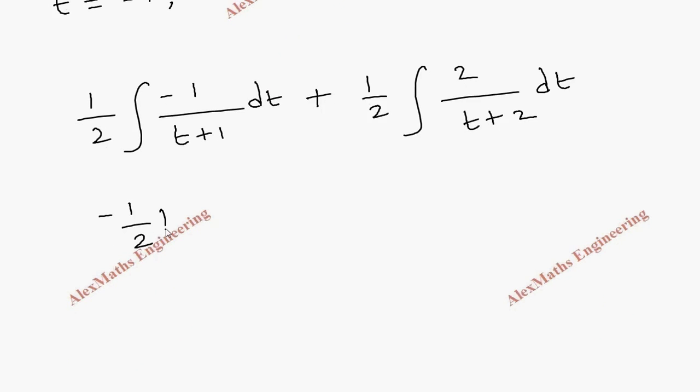So now, this is minus 1 by 2, log mod t plus 1 plus half, anyway we can cancel these two. So, this will become just log of t plus 2 within mod plus constant.